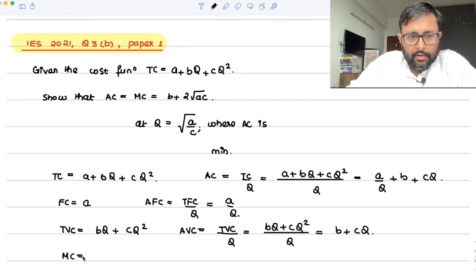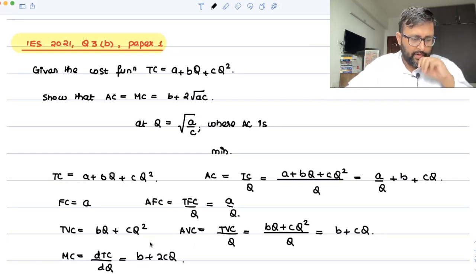What is MC? dTC/dq. You have the total cost function which is given to you. You just have to take the derivative of this: b + 2cq. Fair enough.